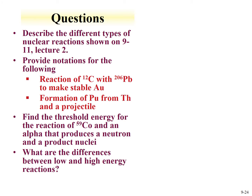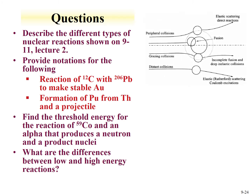Review questions include describing the types of nuclear reactions shown in the lecture. These include peripheral collisions with primarily elastic scattering, grazing collisions with some transfer of nucleons, fusion where all nucleons from projectile and target form a compound nucleus, and scattering where Coulomb repulsion between charged particle and nucleus results in the particle being deflected without full interaction.